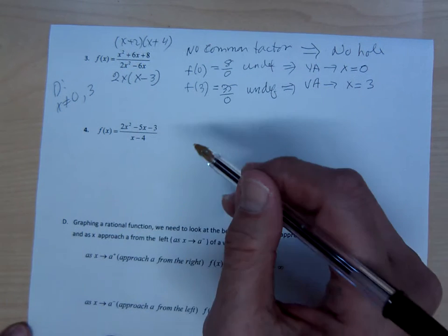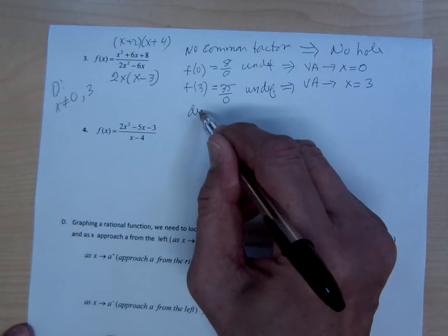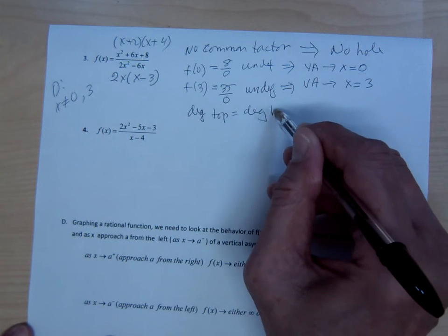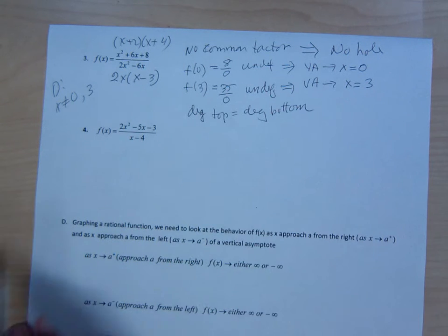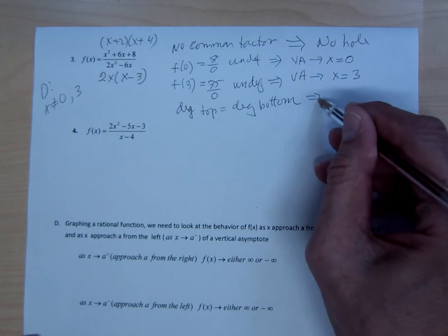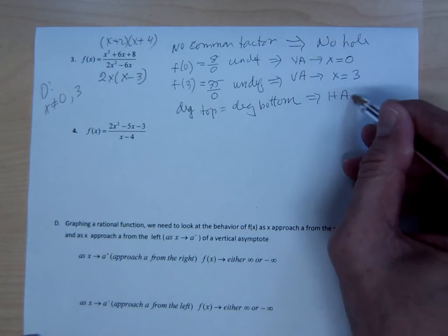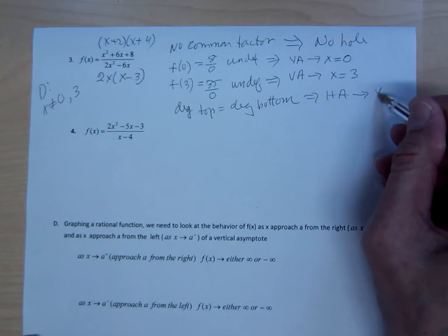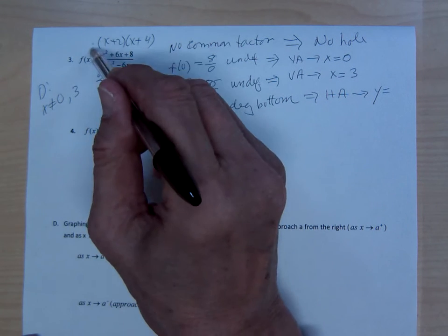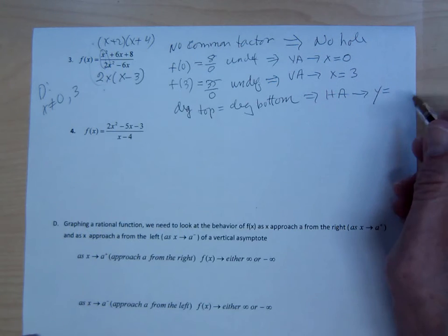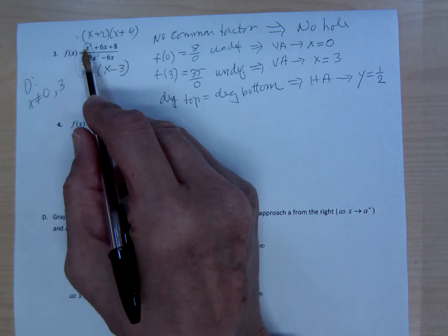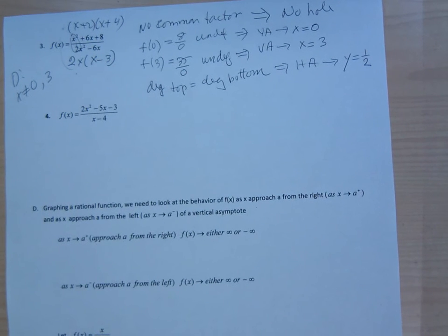How about horizontal? The degree on top equals the degree on the bottom. That's case 2, which implies you do have a horizontal asymptote. The equation would be y equal to the quotient of the leading coefficients — so it would be y equals one-half, since 1 divided by 2 is one-half.